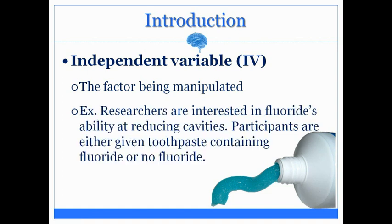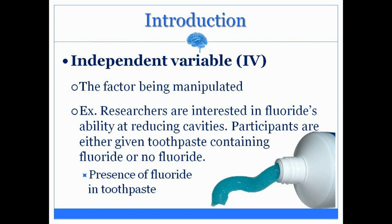For example, researchers are interested in fluoride's ability at reducing cavities. Participants are either given toothpaste containing fluoride or no fluoride. The independent variable is the factor being manipulated, and the factor being manipulated here is whether fluoride was present in the toothpaste.